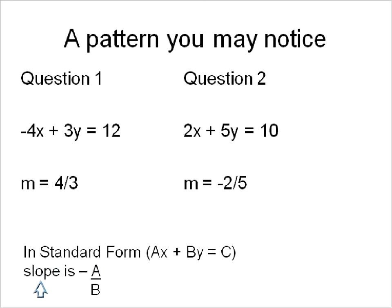So we see from this pattern that the slope is negative a over b. That's not negative a over b, it's negative a over b, the whole thing. We can put parentheses around there if we wanted to.